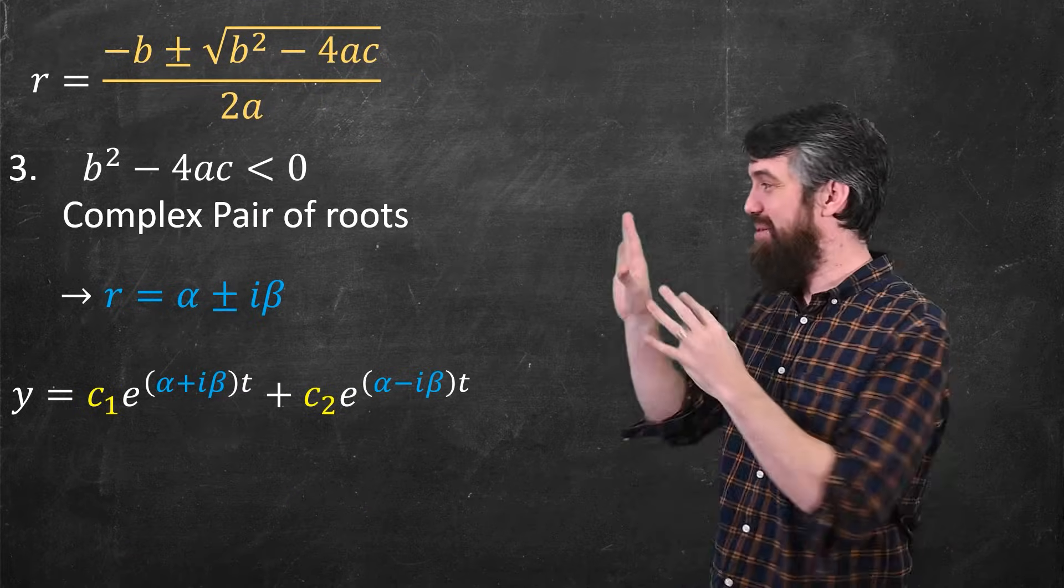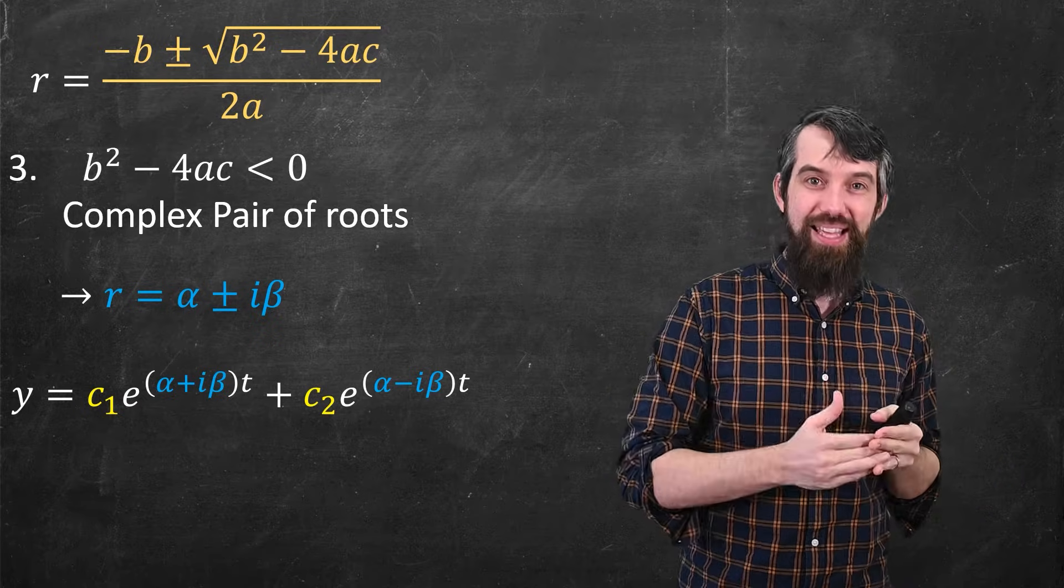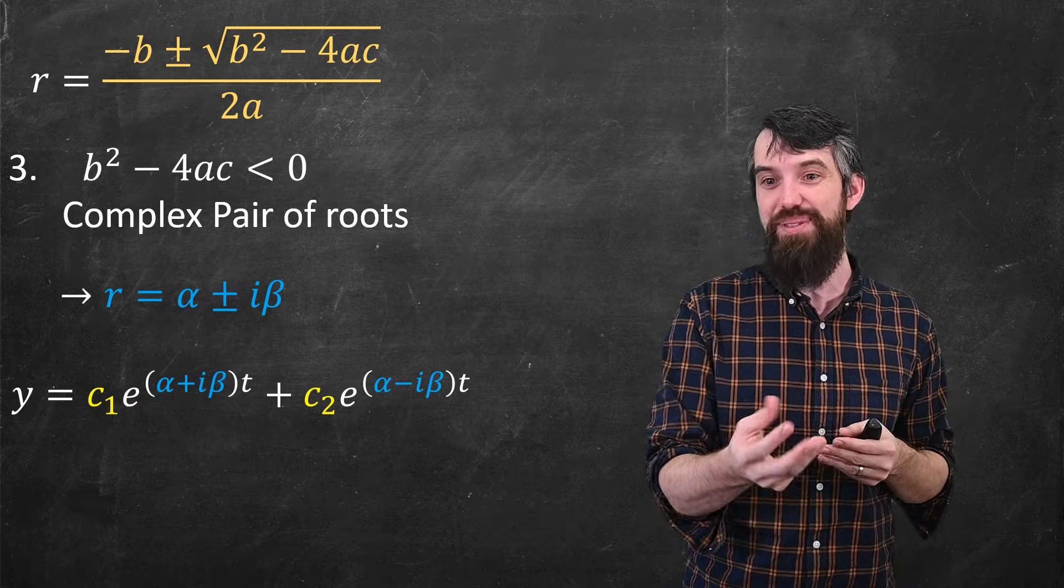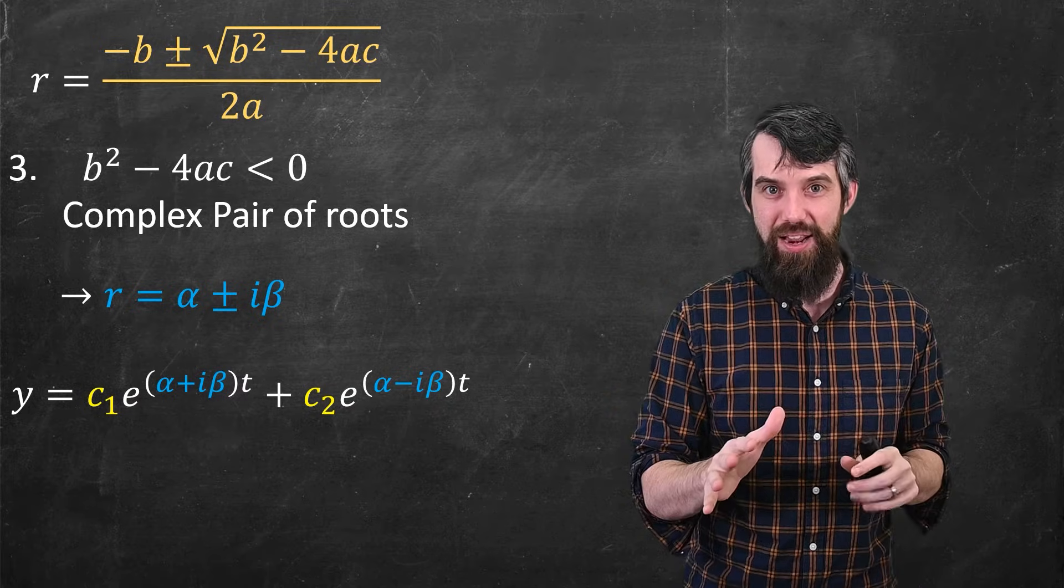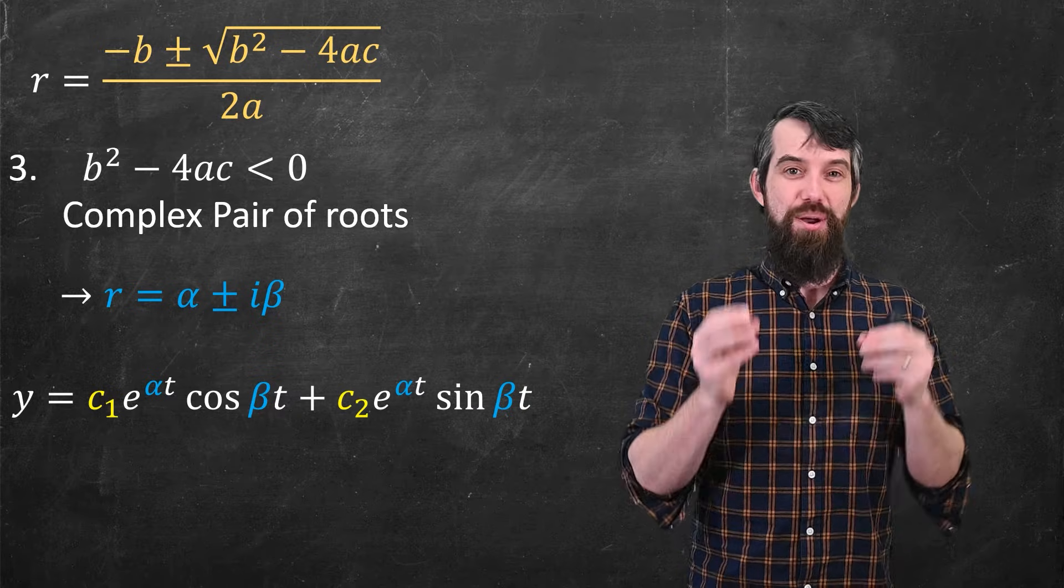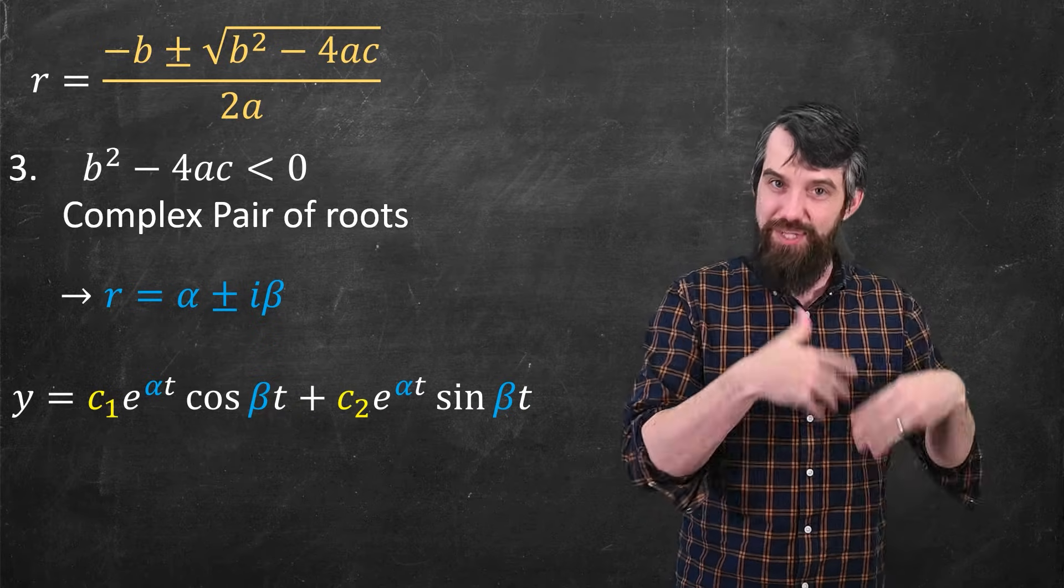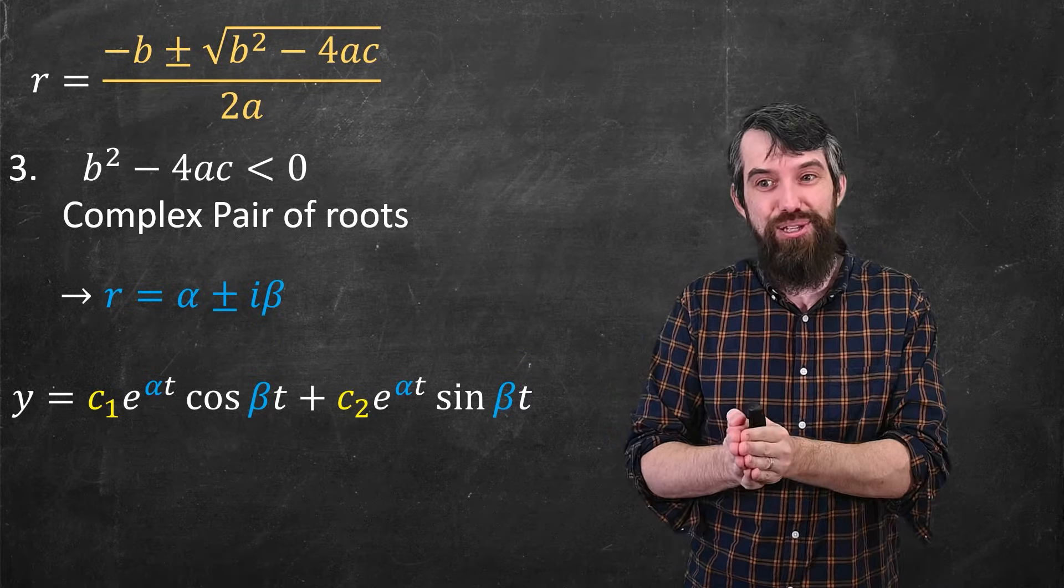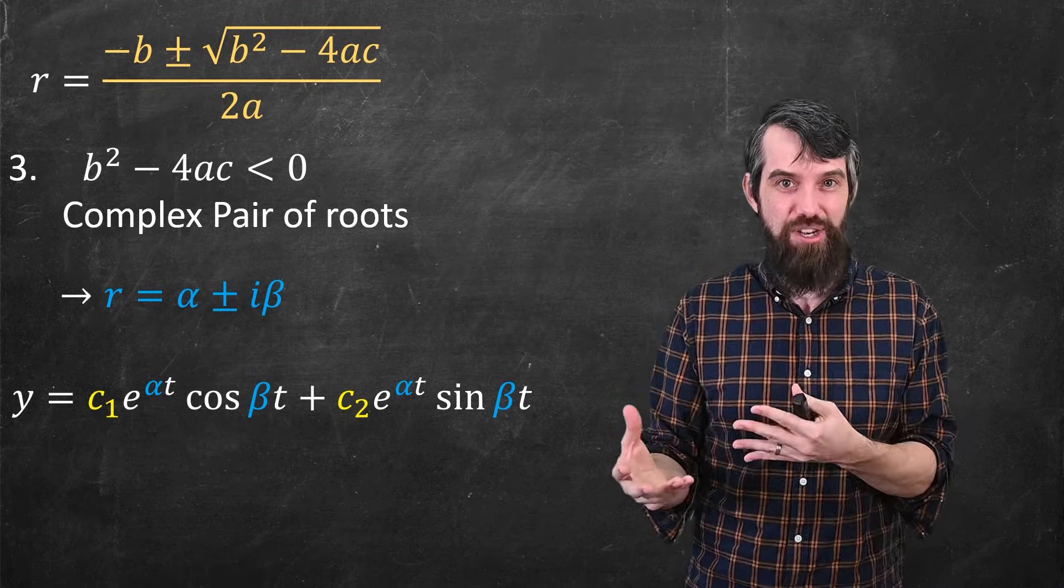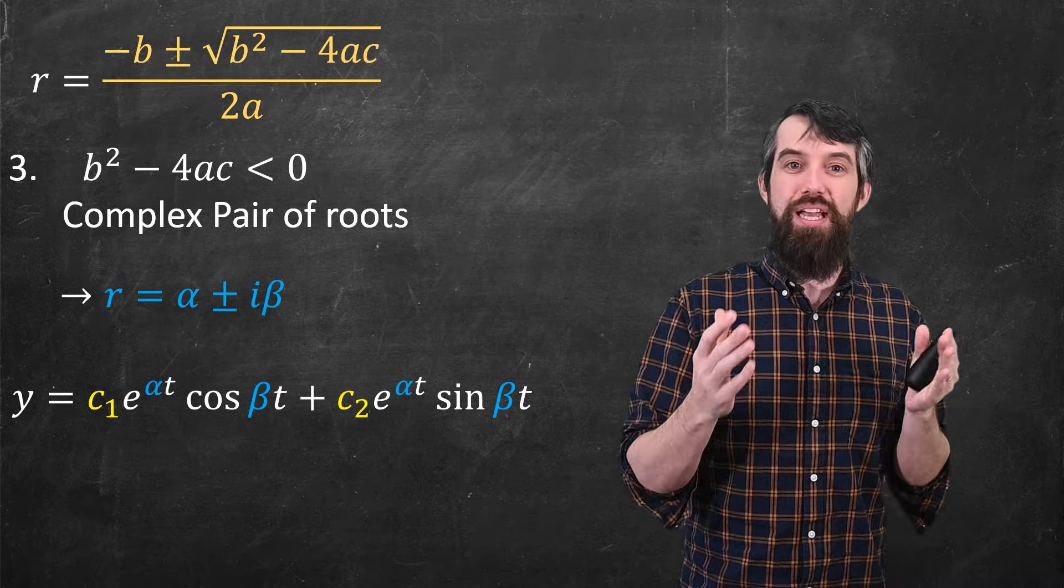Going back to my previous slide where I'd shown the previous way with e to the alpha plus i beta times t and e to the alpha minus i beta times t, I'm going to replace that with those new solutions we found. We have one constant c1 times the first solution, which was an exponential and a cosine, and then c2 times the second solution, the exponential and the sine term. That is my general solution in the case where I have a complex pair of roots.